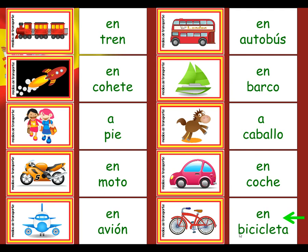So, there are our ten transports. Eight of them begin with 'en'. Two of them — a pie and a caballo — begin with 'a'. Looking at the pictures, can you work out a good way of helping you to remember which two start with 'a' and not 'en'? A pie and a caballo both involve feet and no engines or wheels. They start with 'a' and they're to do with human power or animal power.